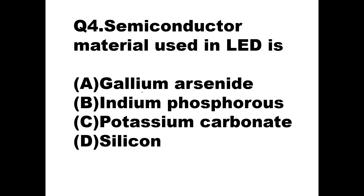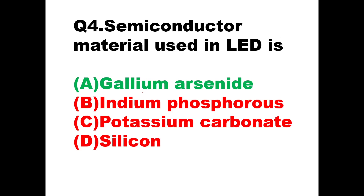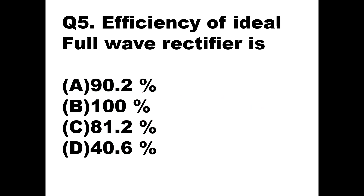Question number four: what semiconductor material is used in LED? Out of the options — gallium arsenide, indium phosphide, potassium carbonate, or silicon — option A, gallium arsenide, is the right answer. Light emitting diodes are comprised of compound semiconductor materials made up of elements from group 3 and group 5 of the periodic table. Group 5 materials commonly used to make LEDs are gallium arsenide (GaAs) and gallium phosphide (GaP).